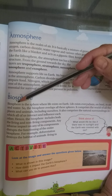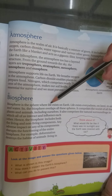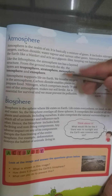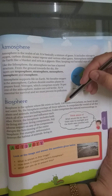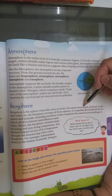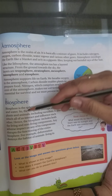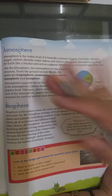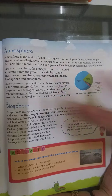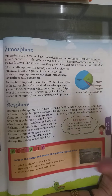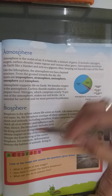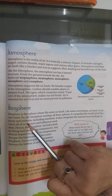Now the last part is biosphere. What do we mean by biosphere? Biosphere is where life exists on earth — where we live. Life exists everywhere: on land, in air, and in water. So the biosphere overlaps all the other spheres — land, air, and water.